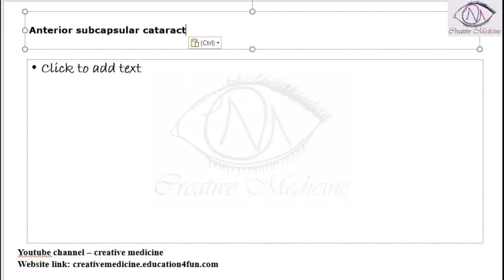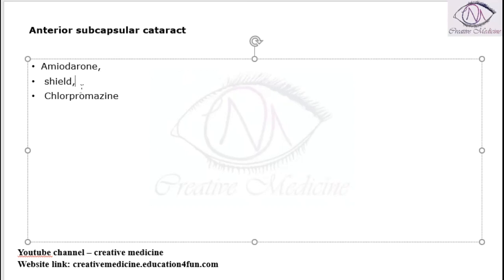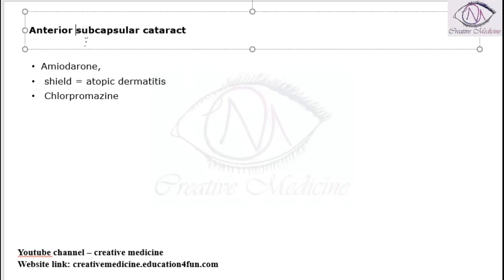Anterior subcapsular cataract occurs mainly due to the drugs like amiodarone, shield cataract which occurs in atopic dermatitis, and chlorpromazine. So anterior subcapsular cataract is caused by amiodarone, shield or atopic dermatitis, and chlorpromazine.